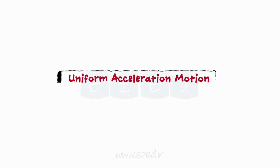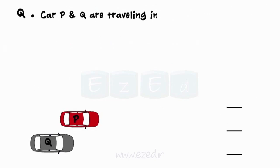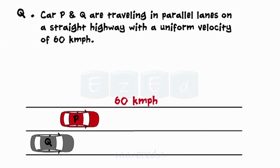Let us consider a problem and understand rectilinear motion in a better way. Suppose car P and Q are traveling in parallel lanes on a straight highway with a uniform velocity of 60 km per hour.